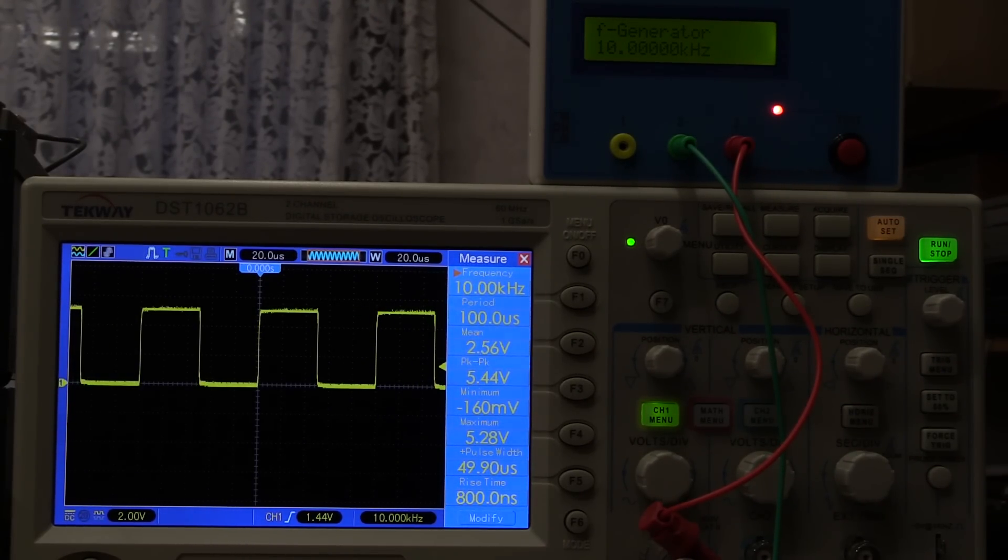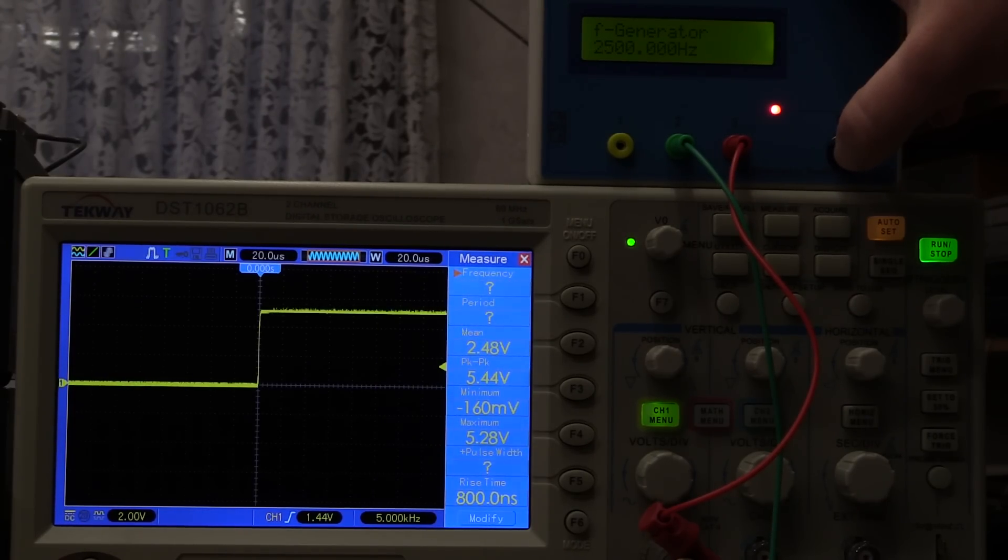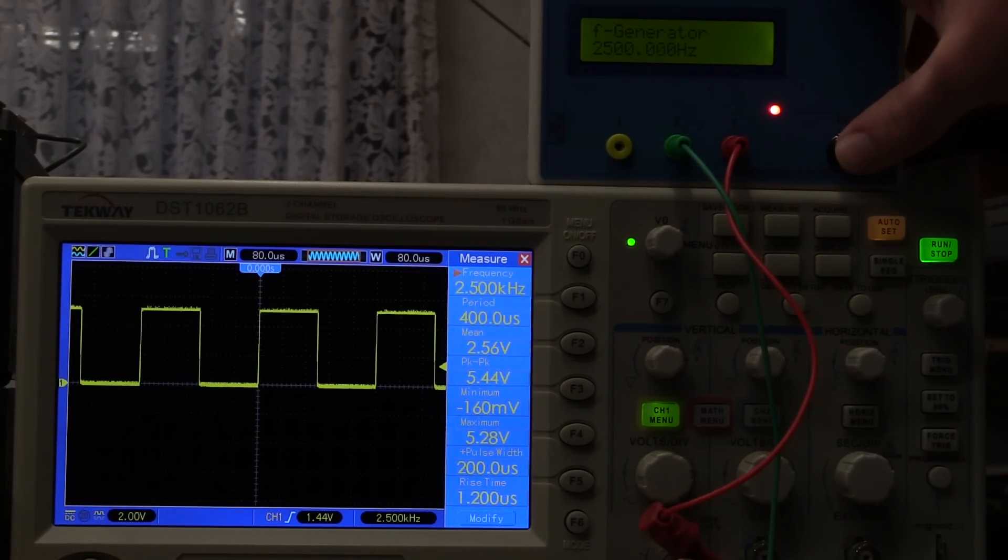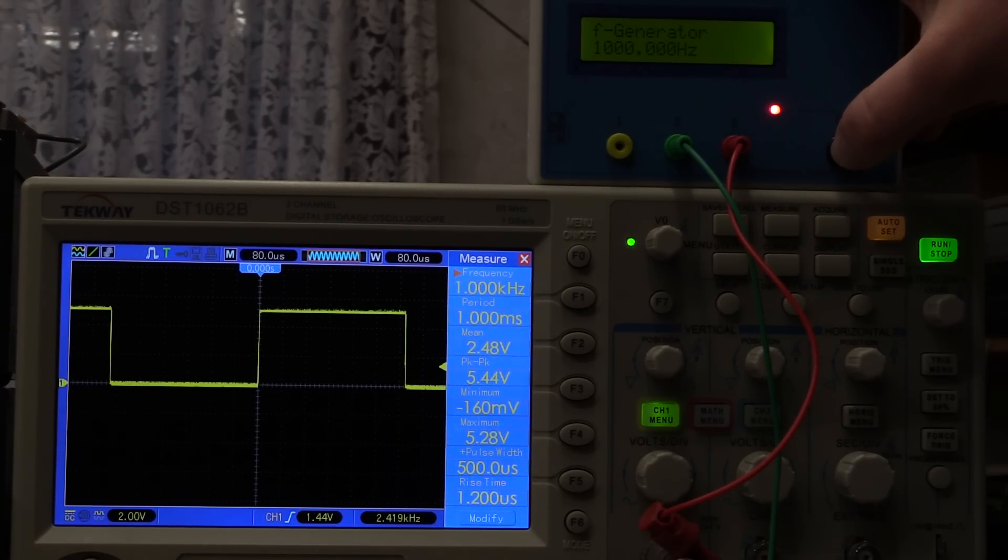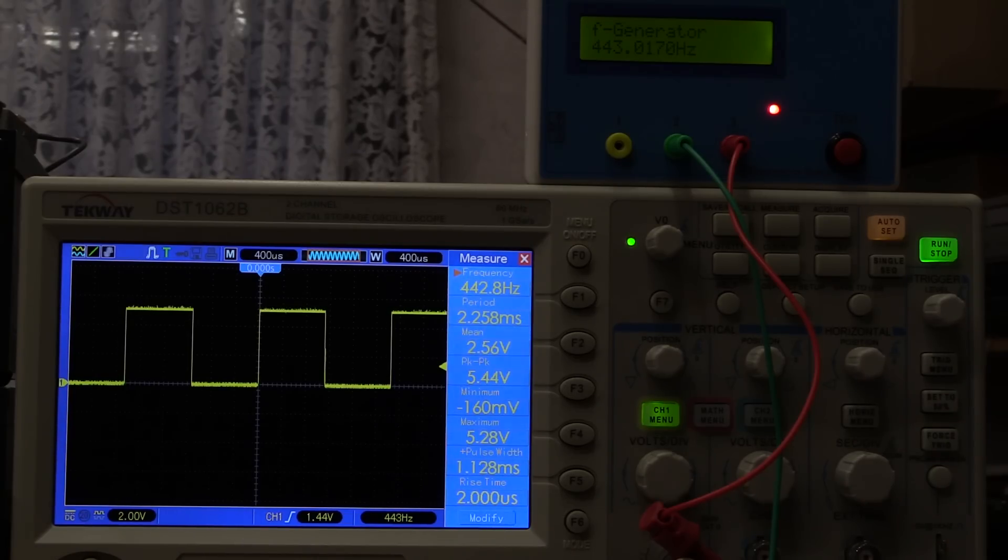And I'd say that is looking quite square. We can go all the way down. We're now at 5 kilohertz, 2 and a half kilohertz. This is 1 kilohertz, a frequency that it probably only selects because it's some sort of a value that it can easily calculate out of the clock frequency of the internal crystal.